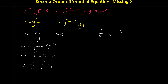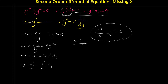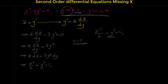Now, if we use the initial conditions, we can find c1. Based on these initial conditions, when x is 0, y equals 2. Note that there is no x explicitly here, but y and y prime are both functions of x, so they depend on x. When x is 0, y is 2.